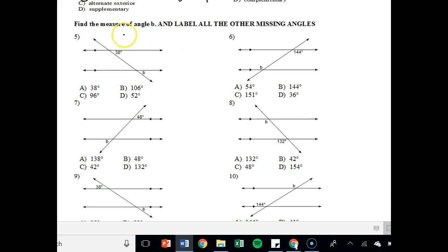It says find the label of angle B and then it says and label all the missing angles. We're going to not do that for today, actually. We're just going to label the type of relationship it is and then label the other angles. So let's look at number five.